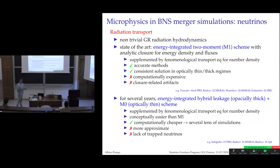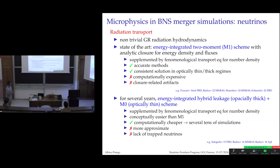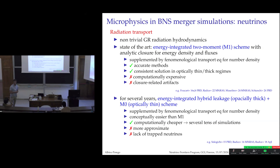Neutrinos present a non-trivial problem because you have to include all regimes in the same simulation. The optical depth varies by five to six orders of magnitude from the center to the optically thin outer region. The state of the art is energy-integrated two-moment schemes, typically supplemented by a phenomenological transport equation for number density. These are accurate and represent proper transport with a consistent solution everywhere in the domain, but they are computationally expensive and require significant resources.